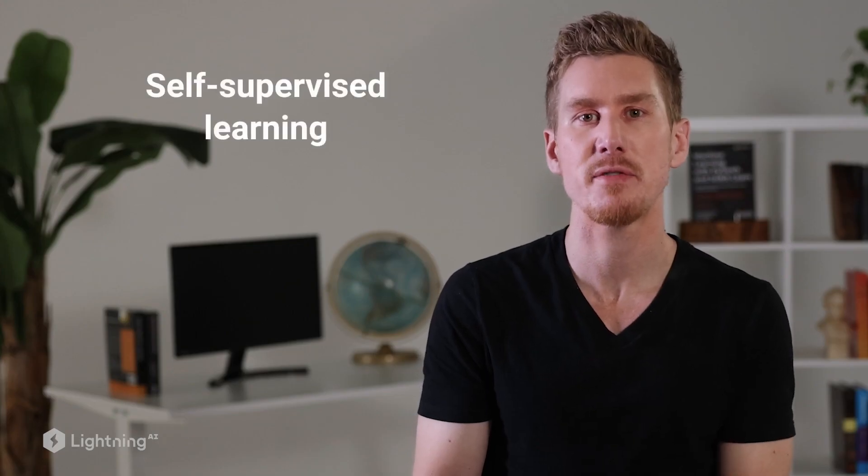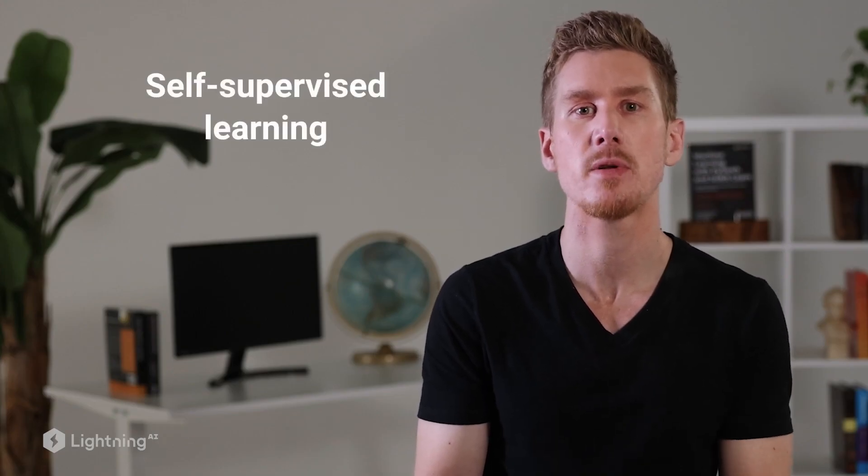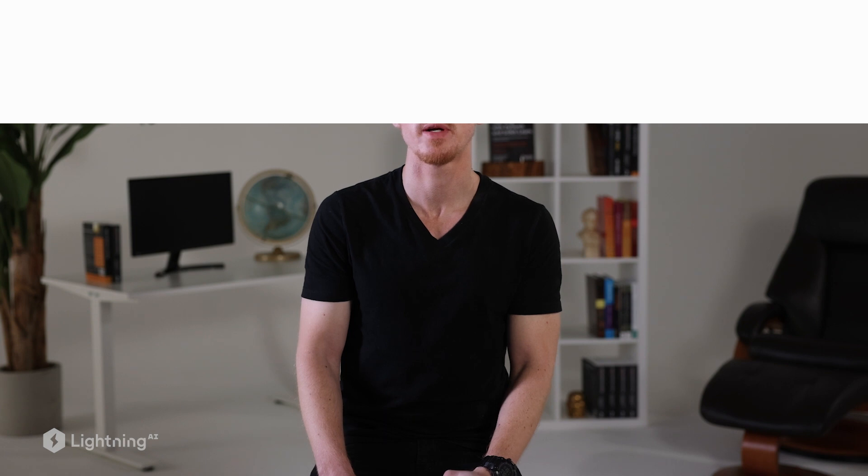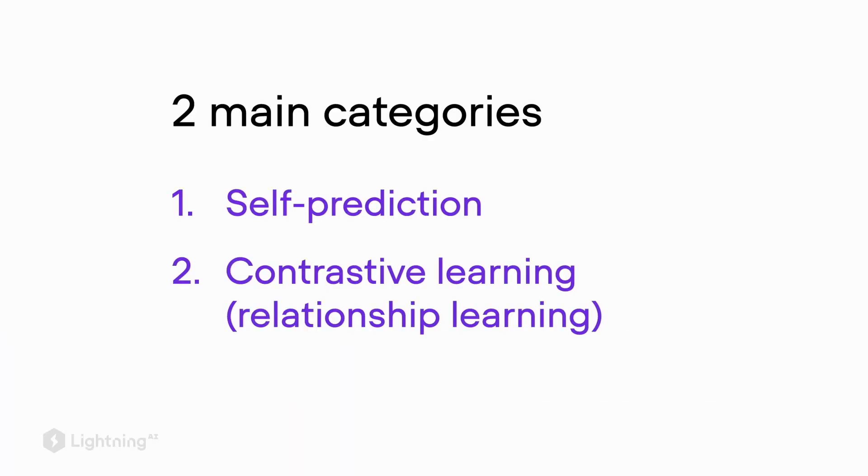In the previous videos we talked about transfer learning and self-supervised learning. Now let's talk about the different types of self-supervised learning. The key idea behind self-supervised learning is that it helps us leverage large unlabeled datasets to pre-train neural networks. There are two main categories: self-prediction and contrastive learning.